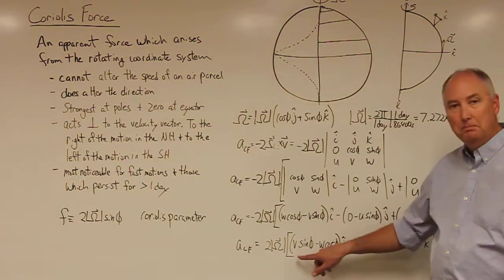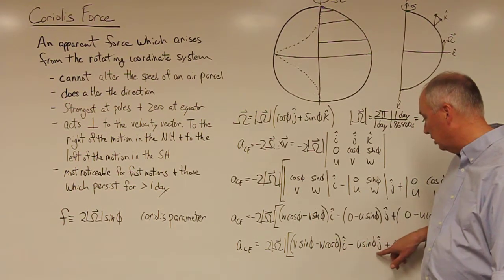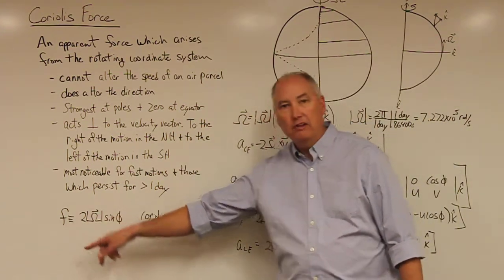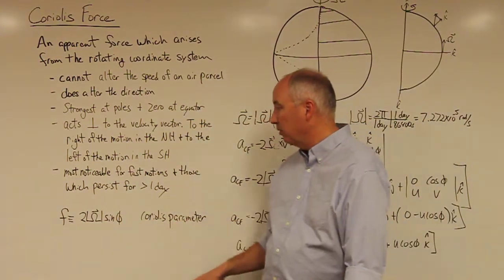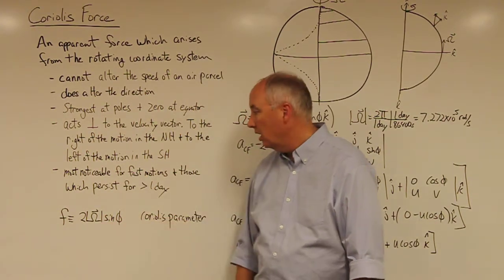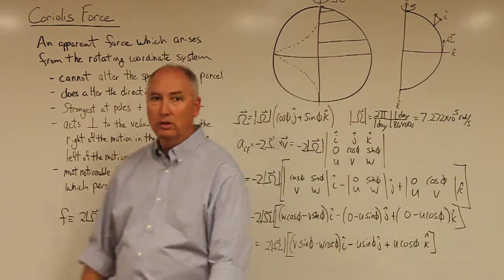And there's another thing that we often do is this 2Ω sine φ shows up in both the horizontal i-hat and j-hat directions. So we have the definition here of f, which is the Coriolis parameter, which is defined as 2Ω sine φ. And we'll often use that nomenclature when we're talking about the Coriolis force.